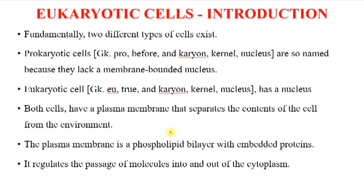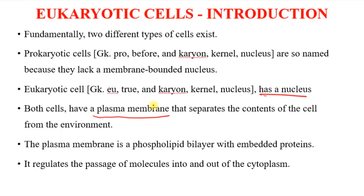We have said that there are two types of cells: eukaryotic and prokaryotic. Prokaryotic cells are defined by the absence of a membrane-bound nucleus, while eukaryotic cells have the presence of a membrane-bound nucleus. Both cells have a plasma membrane that separates the constituents of the cell from the environment. We have also described the plasma membrane as a phospholipid bilayer with embedded proteins — this is a recap as a prelude to what we are about to discuss today.